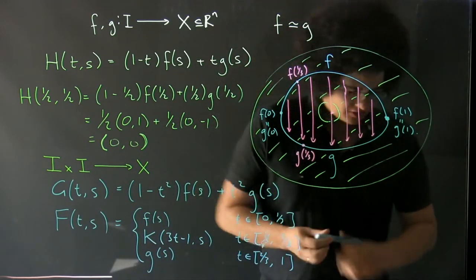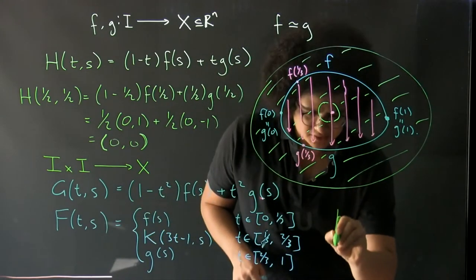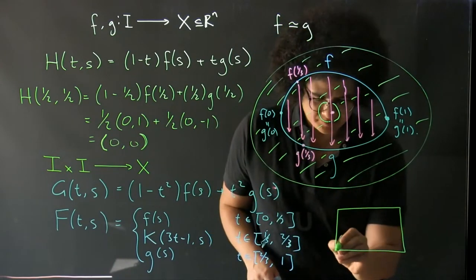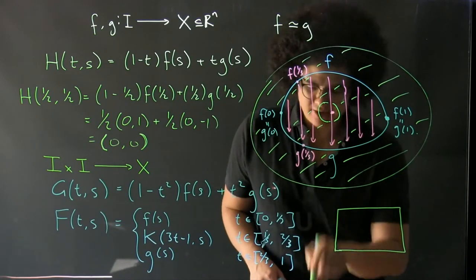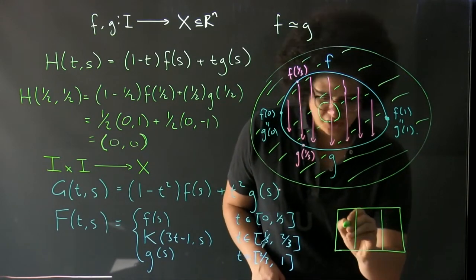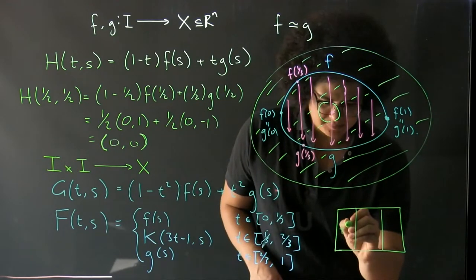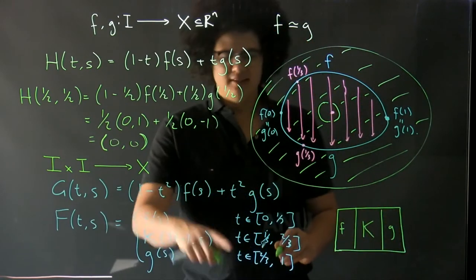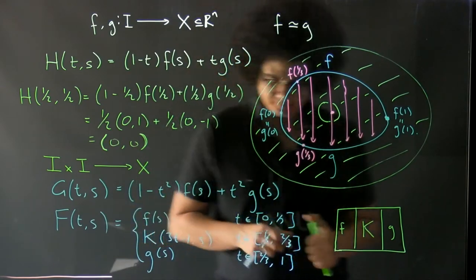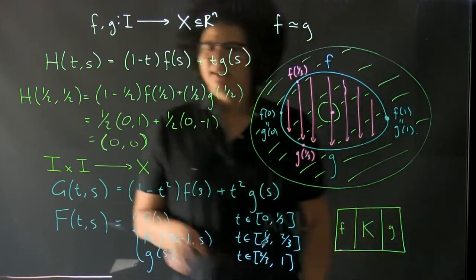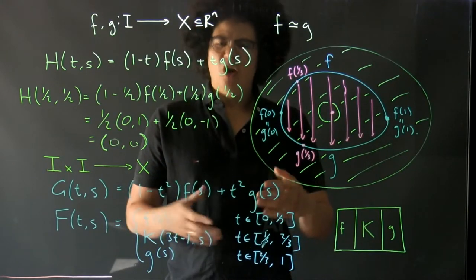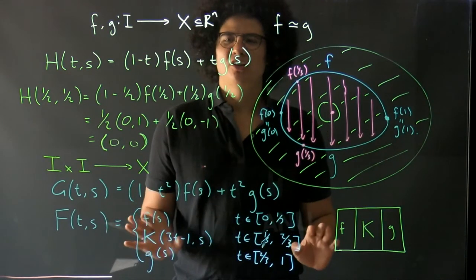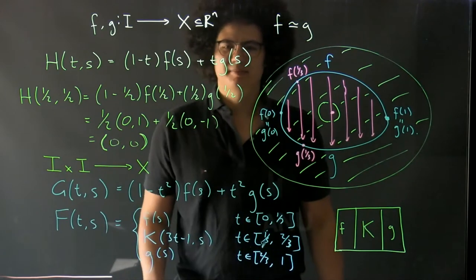And basically what we're doing here is we're taking this square that we were mapping out from this I cross I into our space, where this is our t and this is our s. We're going to say that on the first third of that we just do f, on the last third we just do g, and in between we do this homotopy that we already had but we do it at three times speed. So the point really is that homotopies are not necessarily unique. In fact, in general, homotopies between paths that are homotopic are not unique.